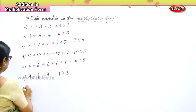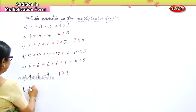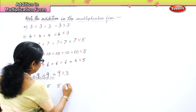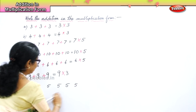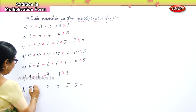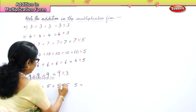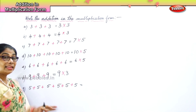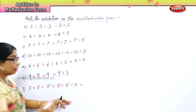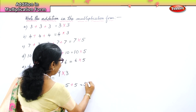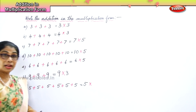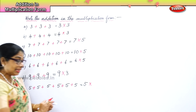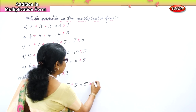Let's take 5: 5 plus 5 plus 5 plus 5 plus 5 plus 5. If you get a number like this, count the 5s: 1, 2, 3, 4, 5, 6 — there are 6 fives. So you will write 5, and how many times? Count: 1, 2, 3, 4, 5, 6 — 5, 6 times.